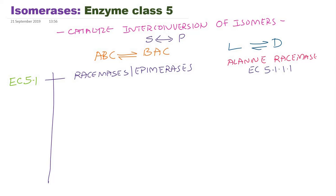The second subclassification of isomerases includes those enzymes which catalyze conversion between cis isomers and trans isomers; they belong to the EC 5.2 series. An example for this particular class is maleate isomerase or maleylacetoacetate isomerase. The first example, maleate isomerase, converts a cis isomer to a trans isomer or vice versa.